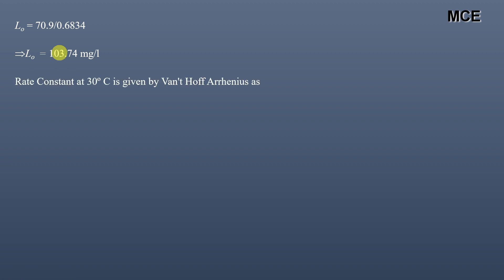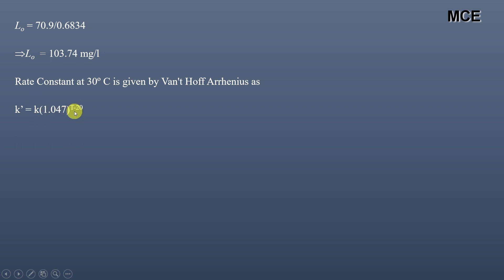We also have to find BOD5 of the same wastewater sample at 30 degrees centigrade, so we need the rate constant at 30°C. This is calculated using the Van't Hoff–Arrhenius equation: K' = K × 1.047^(T − 20), where K' is the rate constant at the new temperature and T is that temperature. Putting in values: K = 0.23 and T = 30, this gives K' = 0.364. This is the rate constant at 30 degrees centigrade.